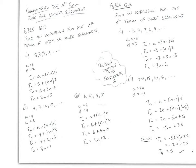Let's look at generating the nth term rule for linear sequences. Find an expression for the nth term of each of these sequences. The first sequence is 5, 7, 9, 11. We know that a is the first term, equal to 5, and d is the difference between each term, equal to 2 here. The formula for the nth term rule for a linear sequence is Tn = a + (n−1) × d.